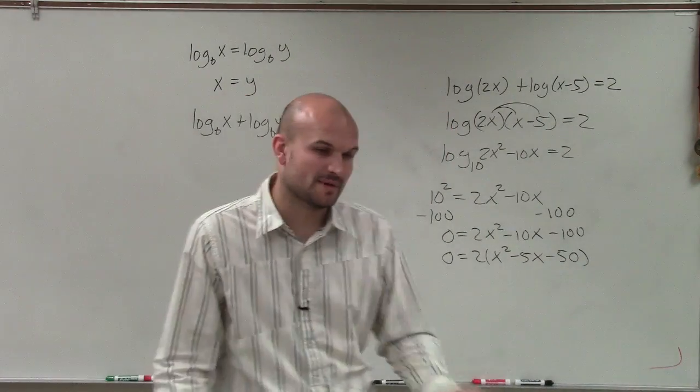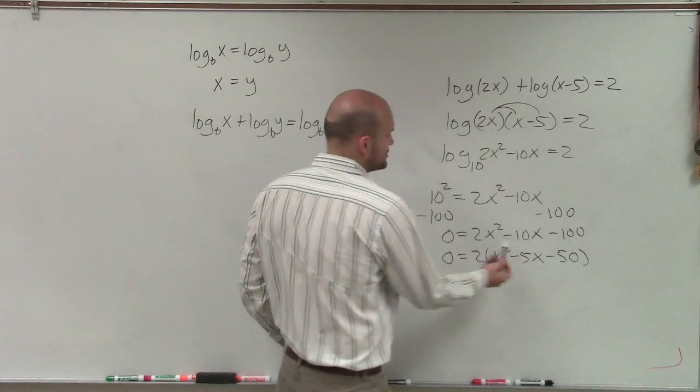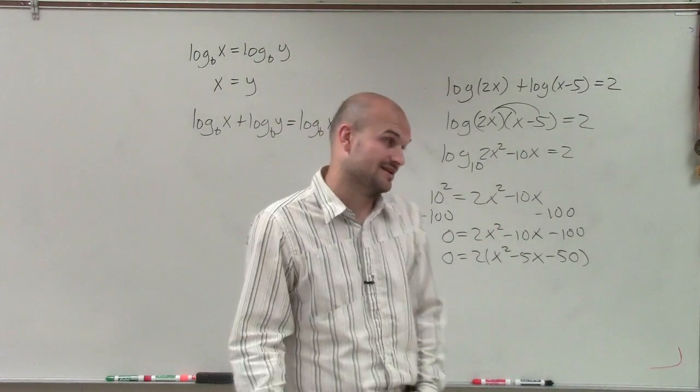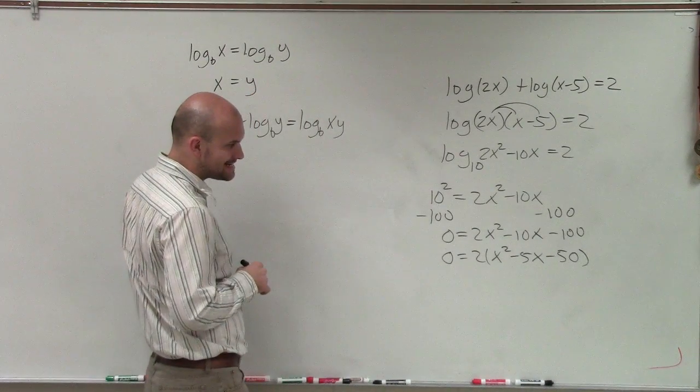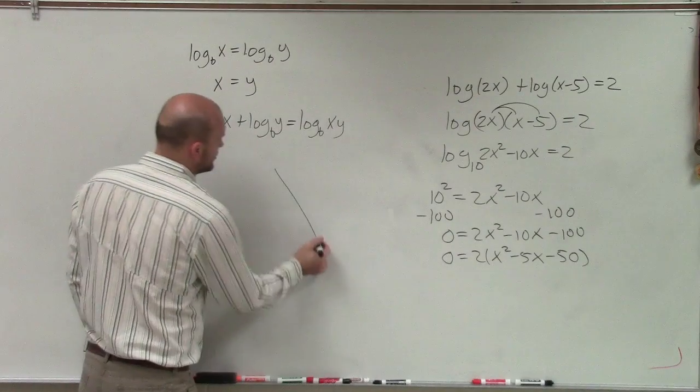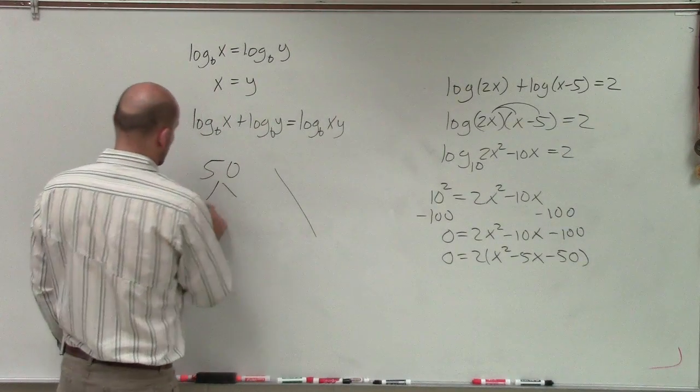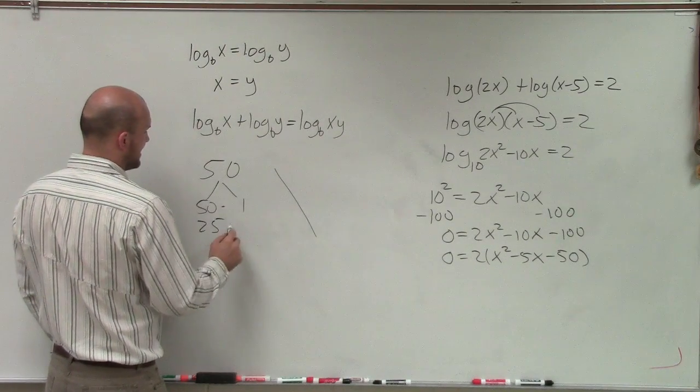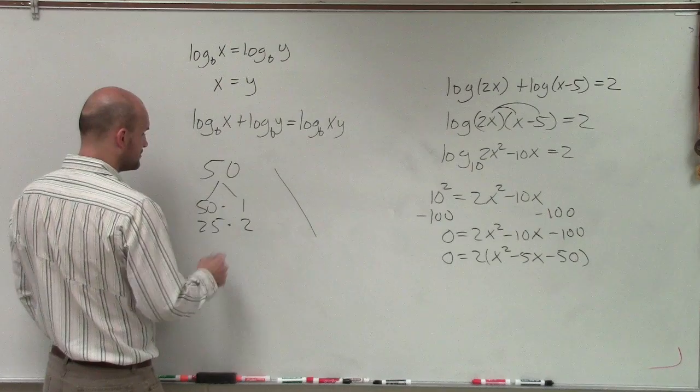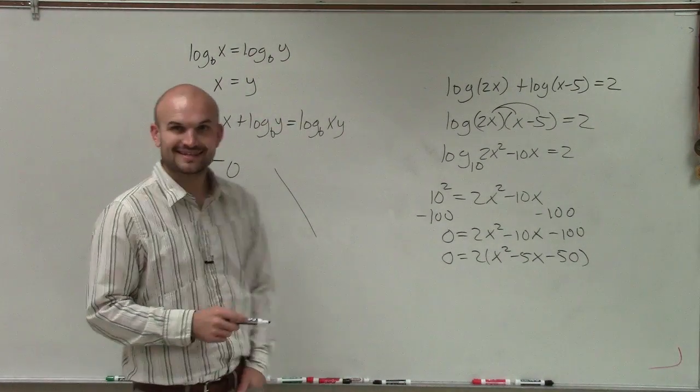So now what I need to do is determine what two numbers multiply to give me 50, but then that are going to add to give me a negative 5. So let's go and take a look at the factors of negative 50. Well, I could do 50 times 1, I could do 25 times 2, I could do 5 times 10. Ooh, that one looks like it's pretty good, right?